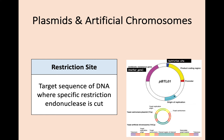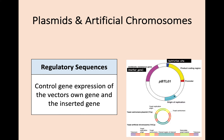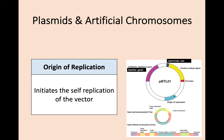The restriction site is the target sequence of DNA where specific restriction endonuclease cuts — both types of vector have these. The regulatory sequence controls gene expression of the vector's own genes and also of the inserted gene. The origin of replication is used to initiate self-replication of the vector once it has been added into a whole cell such as bacteria, allowing replication to take place.